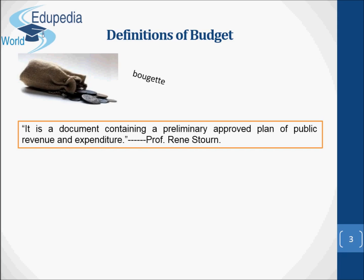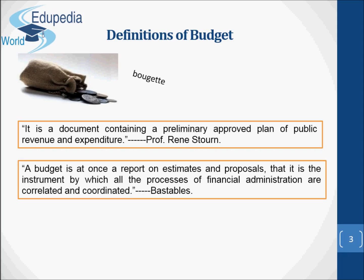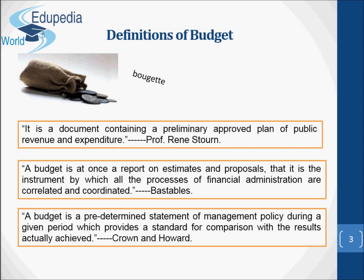According to Bastable, a budget is at once a report, estimates, and proposals — the instrument by which all the processes of financial administration are correlated and coordinated. According to Crown and Harvard, a budget is a predetermined statement of management policy during a given period which provides a standard for comparison with the results actually achieved. Back defines budget as a finance plan and a procedure for formulating, authorizing, executing and controlling this plan, with some government authority responsible for each successive step in this procedure.